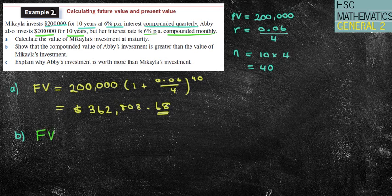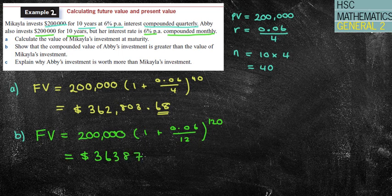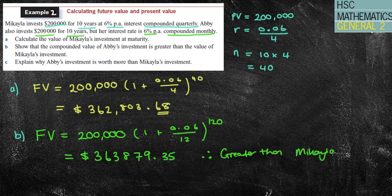So my future value equals $200,000, that same amount, 1 plus 0.06, still 6%. But this, instead of doing it quarterly, so dividing by 4, we're doing it monthly, which is going to mean that we're going to be calculating the interest more often, which obviously means it's going to be a bigger amount. So 10 times 12 is 120. So what we now need to do is just modify that previous question, or we can redo it, but you can just change the values if you wish, so that it is over a monthly compounding period. If I do that, we come up with this time $363,879.35. So it is bigger, not by much, probably just over $1,000, but certainly it is bigger. Therefore, it is greater than Michaela's investment.